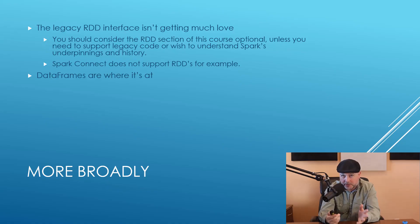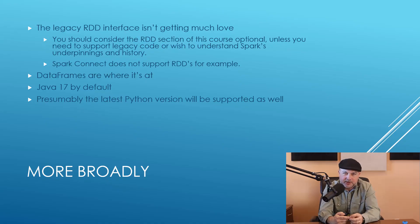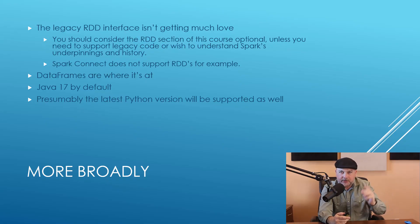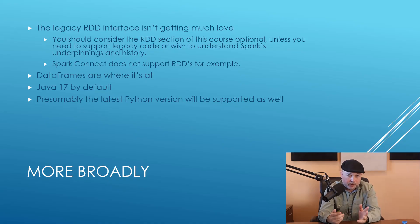DataFrames are where it's at. Java 17 is going to be the default Java version for Spark 4, and they'll keep updating that. As of the Spark 4 Preview 2 release, they still don't support Python 3.12, but there's been chatter in the development board indicating they will add that. So watch for the latest Python and Java versions being supported. With Spark 3, we had to install older versions of both Python and Java, which was annoying — that should improve with Spark 4.